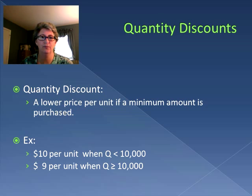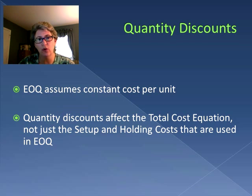When we did the inventory analysis we started with economic order quantity EOQ, and that assumes a constant cost per unit. In fact, when we calculate EOQ we're just looking at setup and holding costs, we're not looking at anything else.